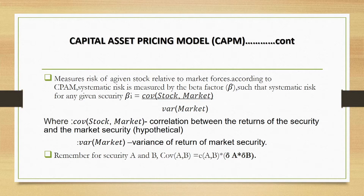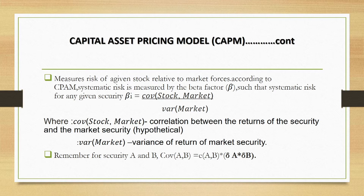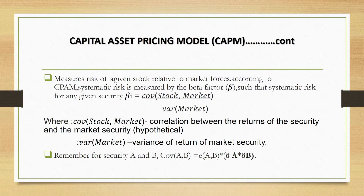COV is the covariance — the relationship between the return of two securities making the portfolio and how the two behave. VAR is the variance — in layman's language, we can say the volatility. How does the return of a market security behave when the market factors start reacting? For instance, if there is high inflation, how will the return of a market security behave?